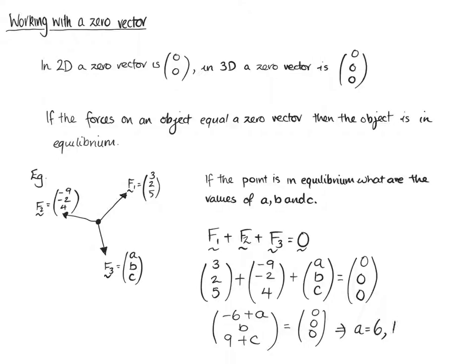In this case, B must equal 0, and C must equal -9. To make that true, it's like saying, what value have I got to put in to make this zero? It's got to be 6. What value here to make that zero? It's got to be 0. What value here to make that zero? It's got to be -9. So we find that resultant force that gives us that zero vector.